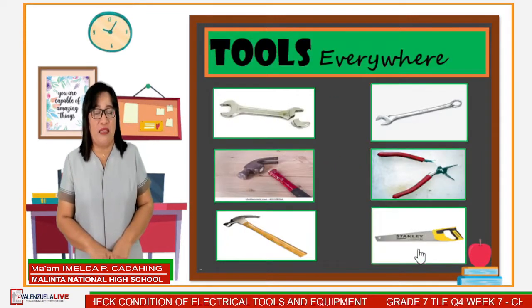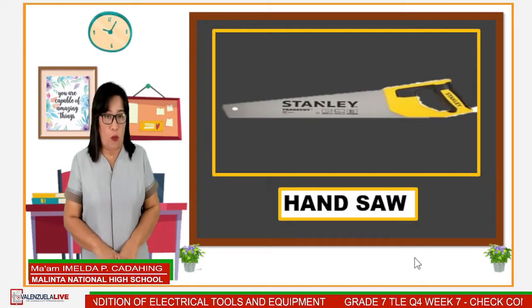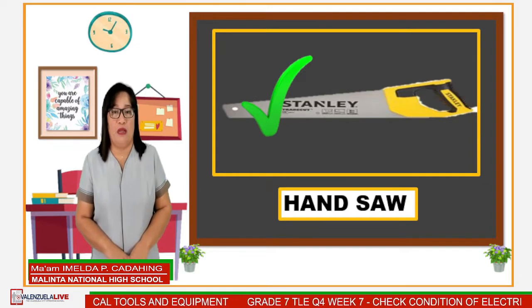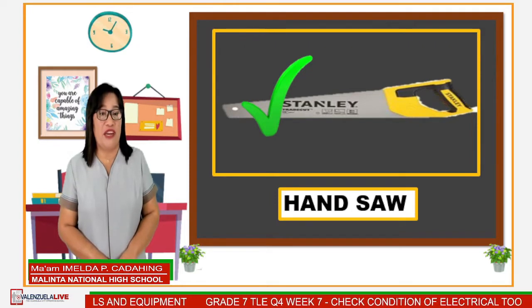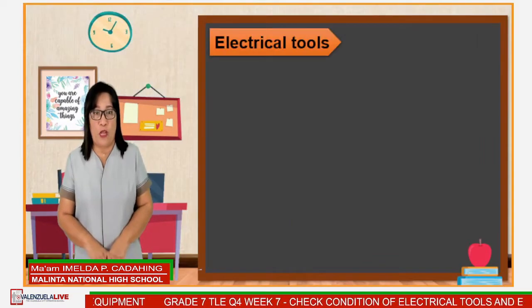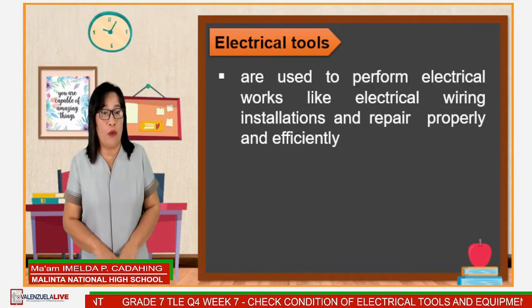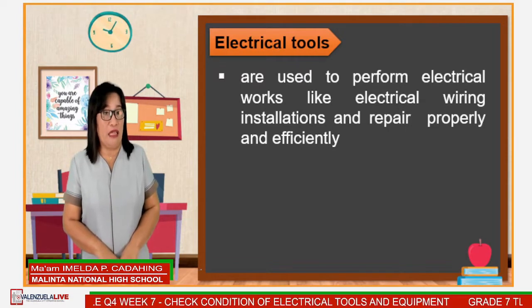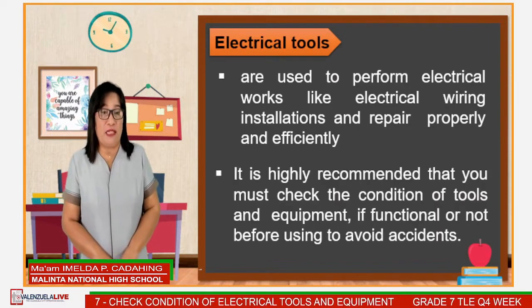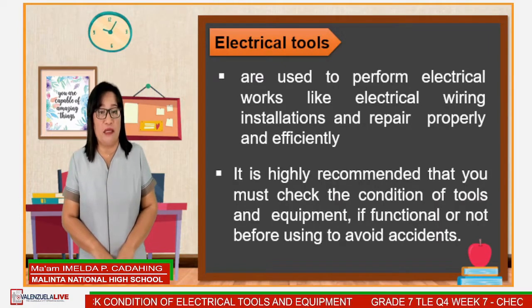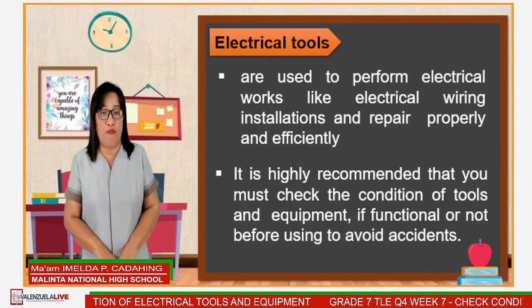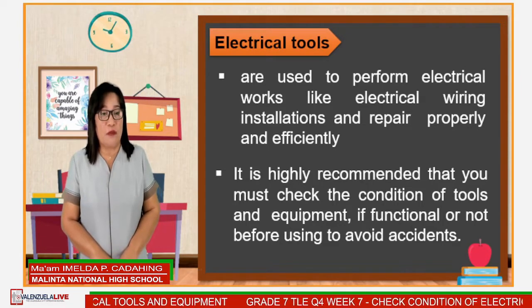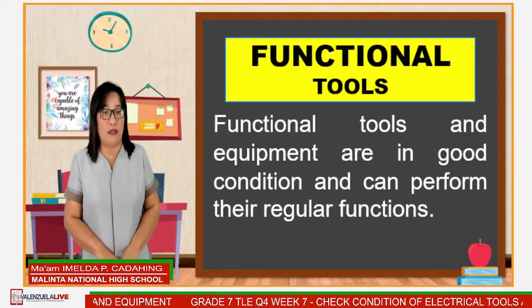And last, but definitely not the least — hand soap. Is it functional? Yes, it is. All the tools we have presented are just examples of electrical tools. They are used to perform electrical work, like electrical installation and repair, properly and efficiently. Because of their purposes, conditions of such tools are recommended to be checked if functional or not before using, to avoid accidents. Based on their conditions, tools may be described as either functional or non-functional tools.